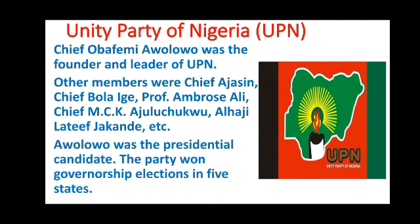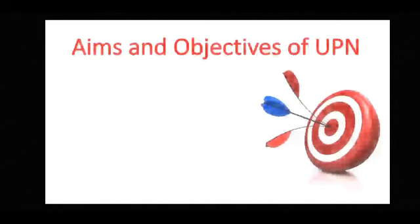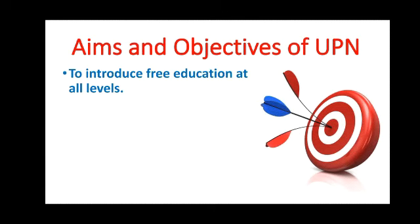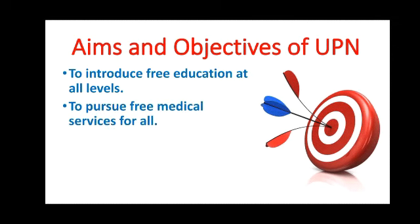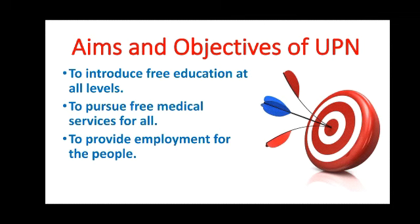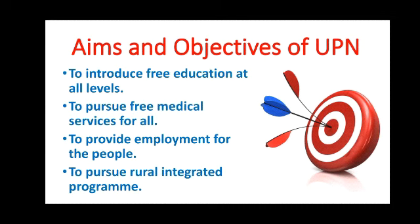The aims and objectives of the Unity Party of Nigeria include: to provide free education at all levels, to pursue free medical services for all, to provide employment for the people, and to pursue a rural integrated development program. These were the various aims and objectives of the UPN.